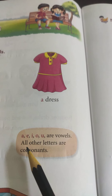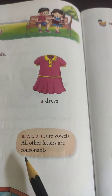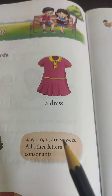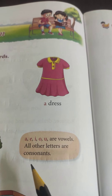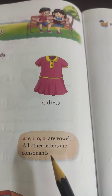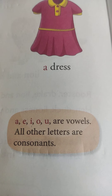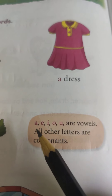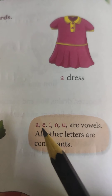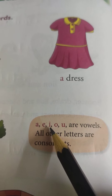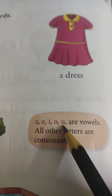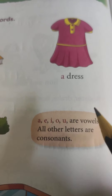All other letters are consonants. That means apart from these five letters — A, E, I, O, U — all remaining letters are consonants. Again, see and listen carefully. A, E, I, O, U are vowels. These are vowels.